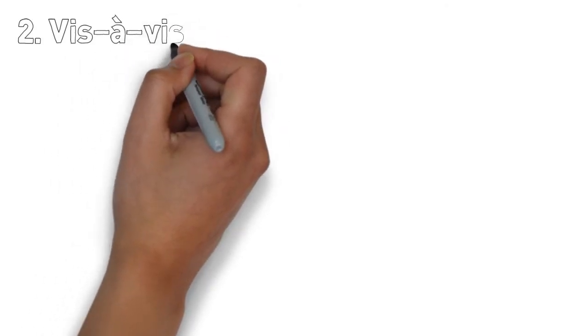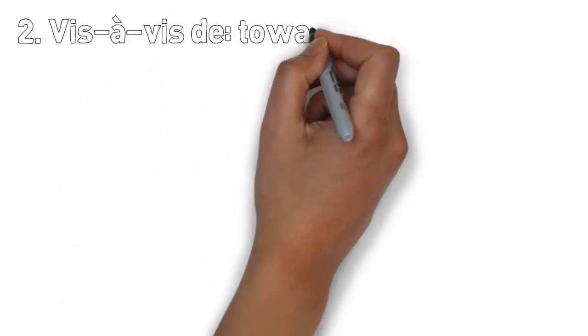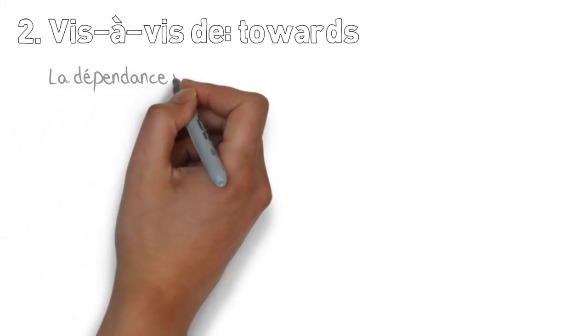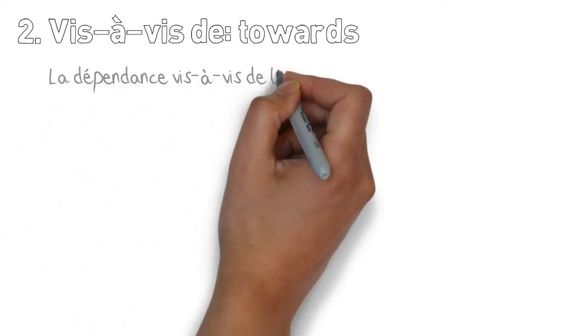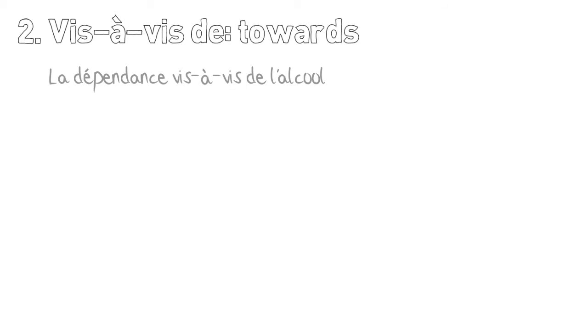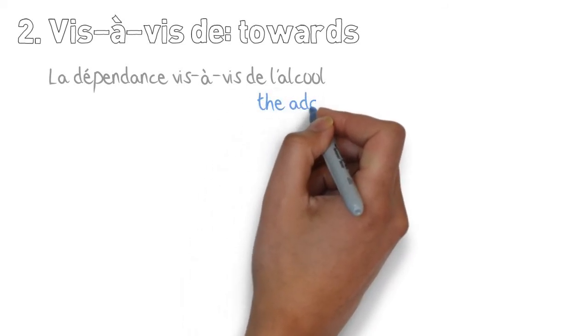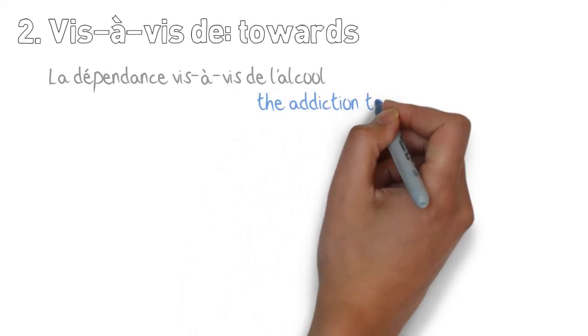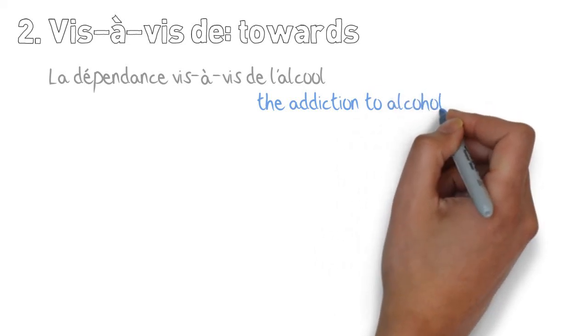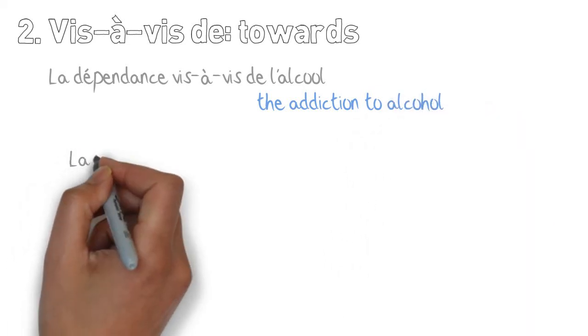The second meaning with the second expression using vis-à-vis is vis-à-vis de. And here the meaning is towards. La dépendance vis-à-vis de l'alcool. The addiction to alcohol. We could also say la dépendance à l'alcool.